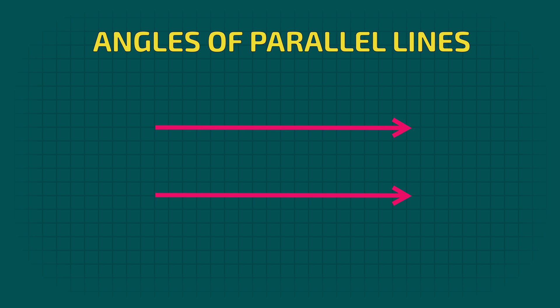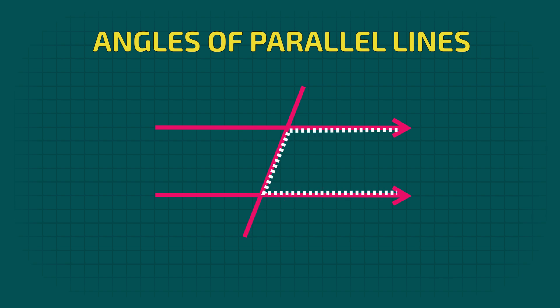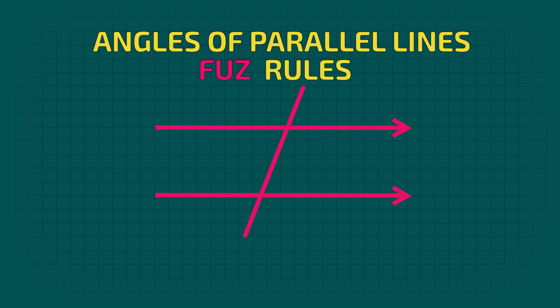Here are two parallel lines. They are marked with arrows to show they are going in the same direction. When a third line crosses those two parallel lines, three shapes can be made: an F shape, a U shape and a Z shape. We call these rules the fuzz rules.